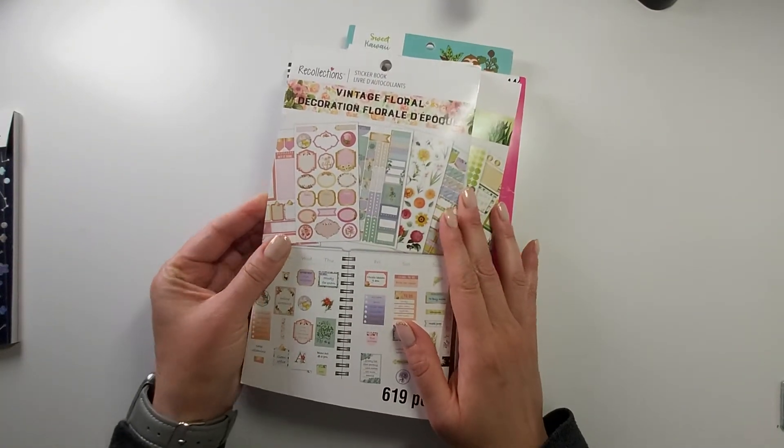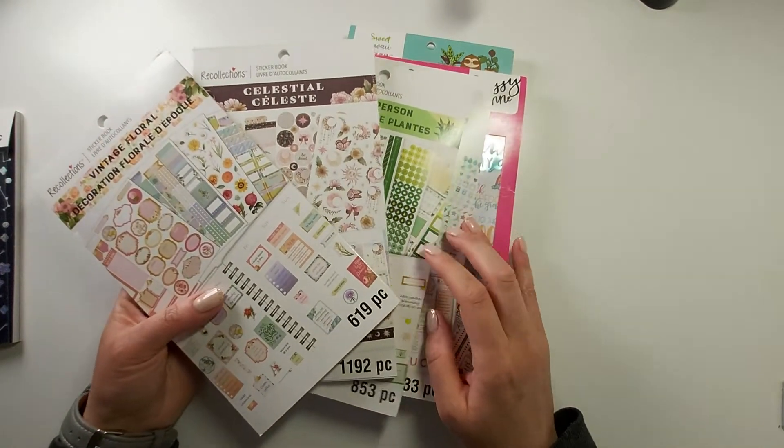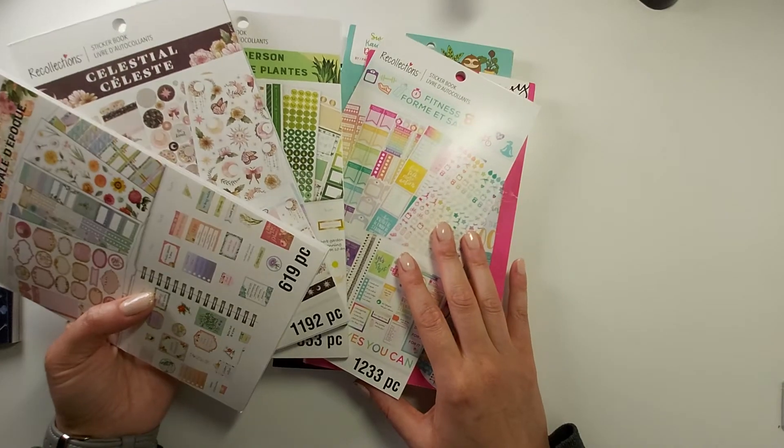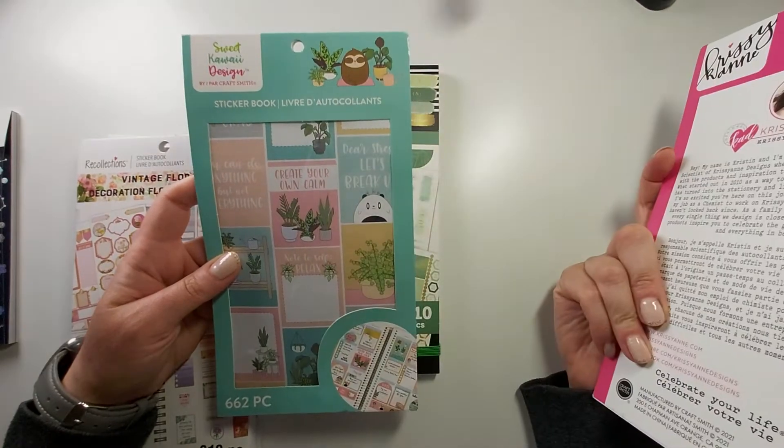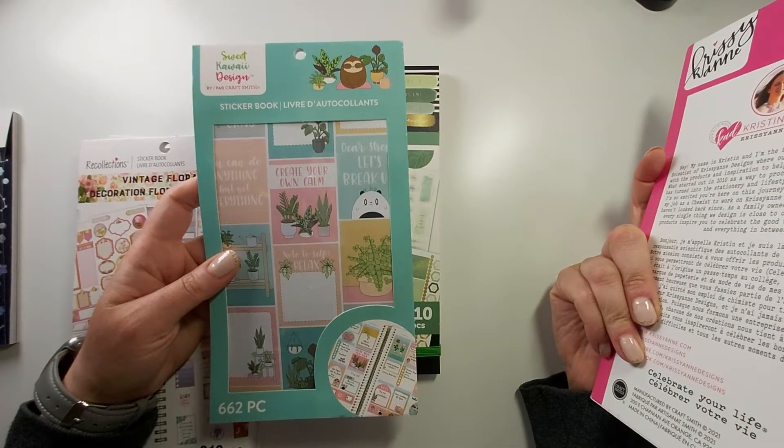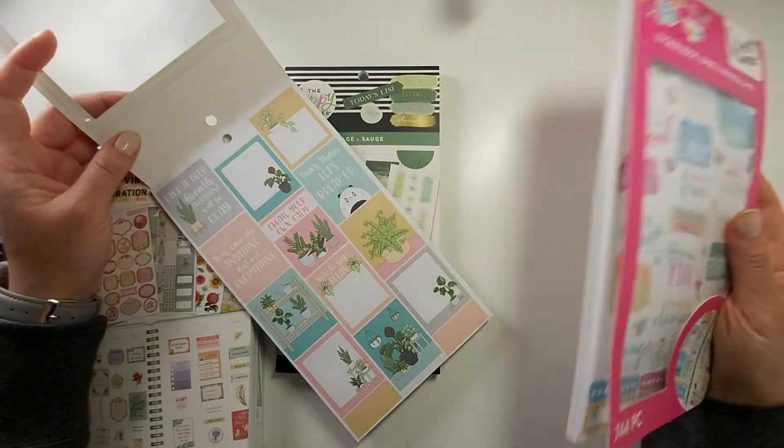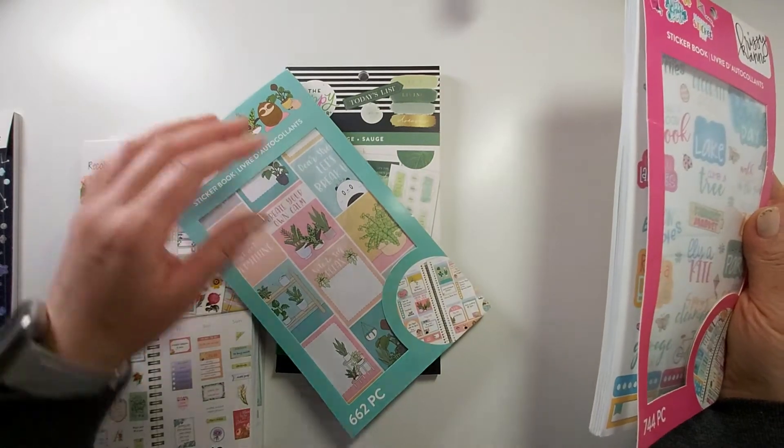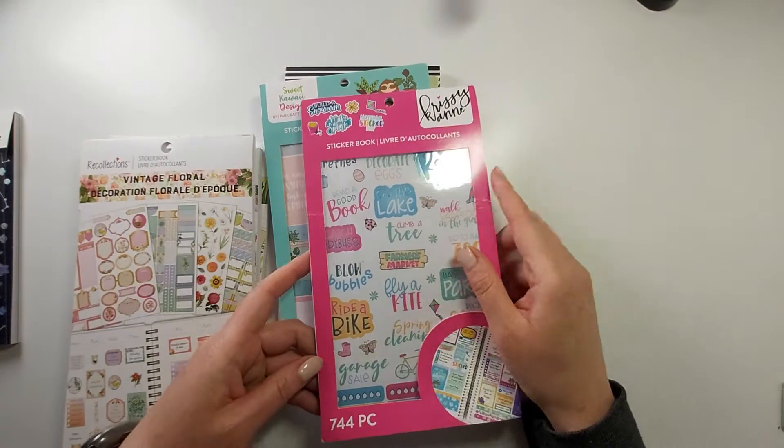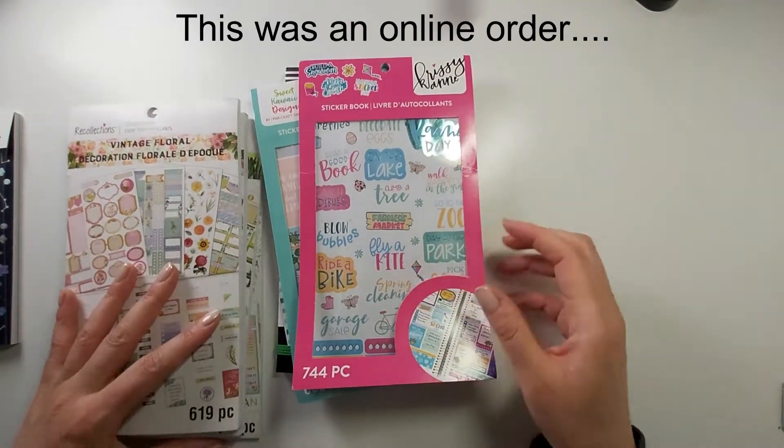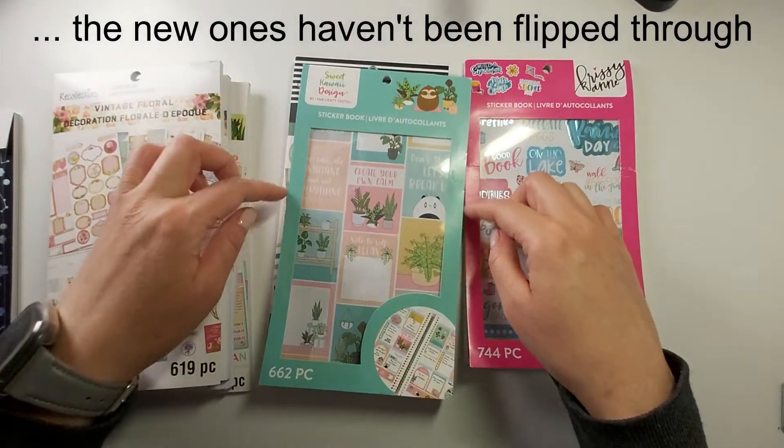So the new ones that I got are vintage floral, celestial, plant person - love the gender neutrality - and fitness. There's also anti-stress which is kind of a weird one, but I like this sticker here. It's an old sticker book. You can tell which ones are new and which ones are old because these ones have been hanging on the shelf with those annoying stickers.